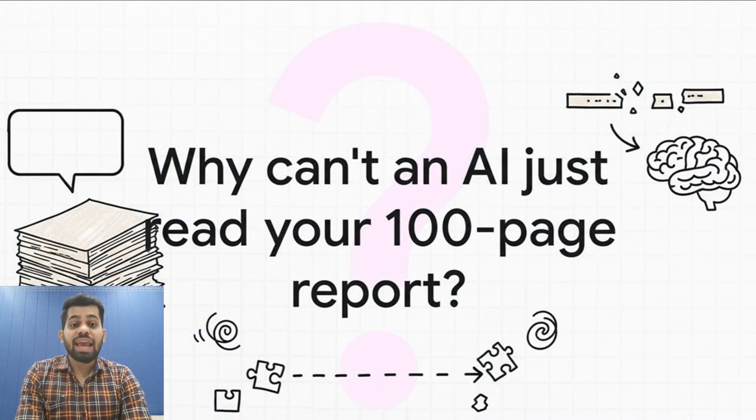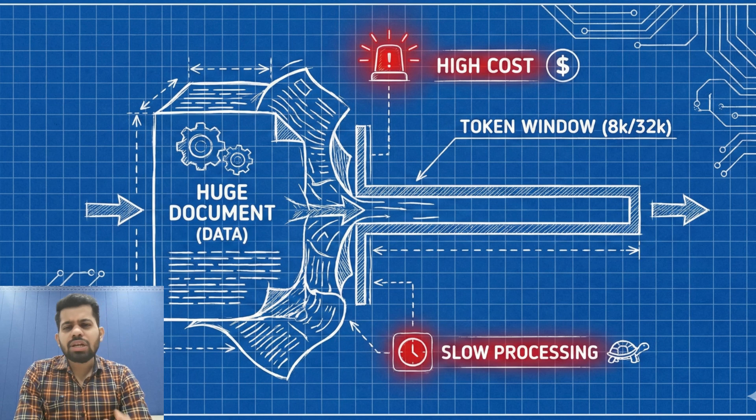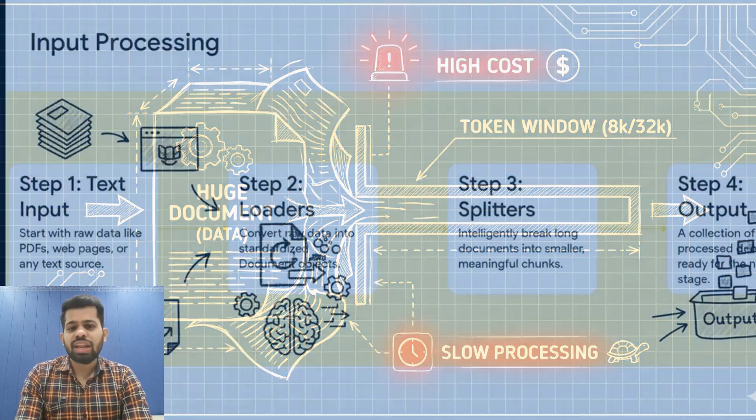But here is the problem: LLMs cannot just understand entire books - they have token limits. And even if they don't have that, processing huge chunks of text is very inefficient and expensive. That's why the next step comes - document loaders.